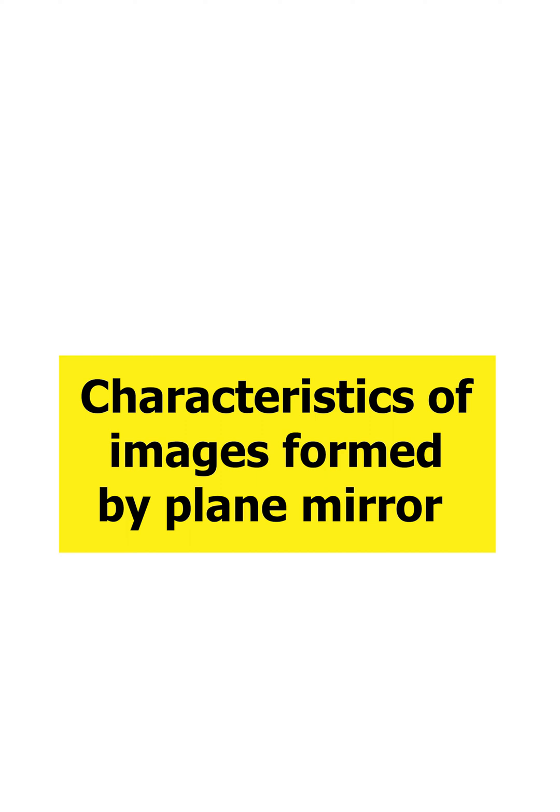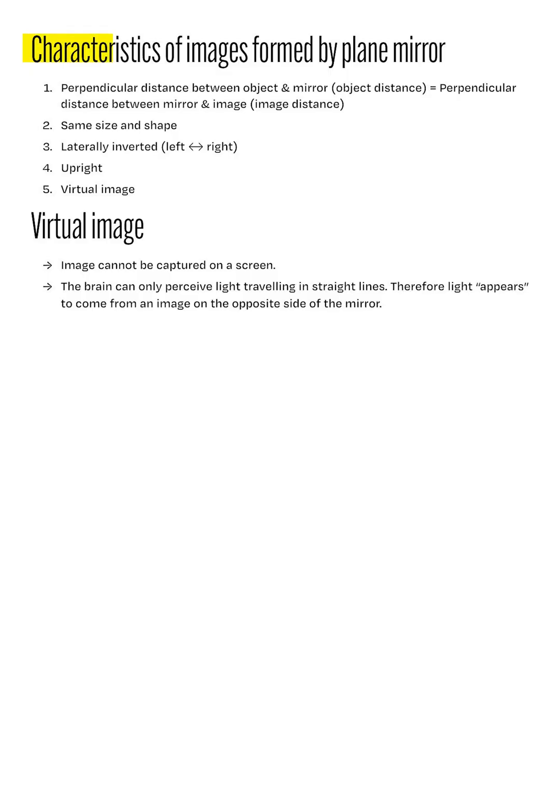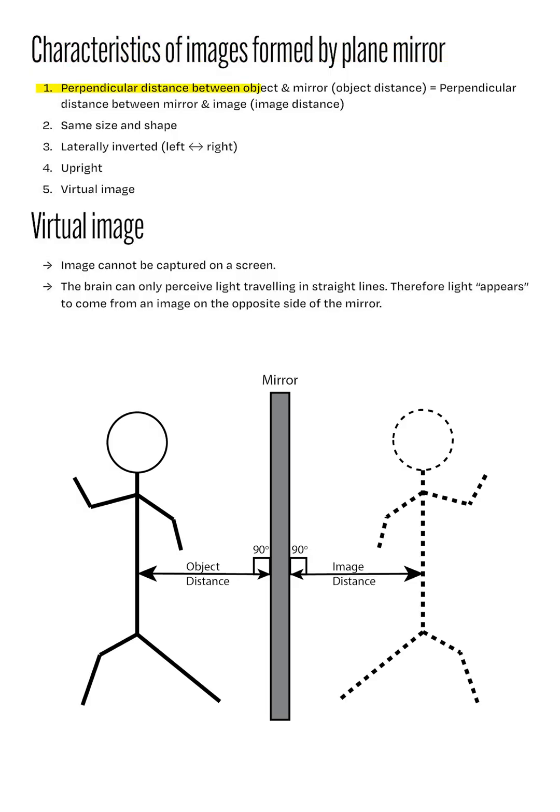In the next part of the chapter, we will discuss the characteristics of images formed by a plane mirror. There are a total of five characteristics. Number one, the perpendicular distance between the object and mirror must be equal to the perpendicular distance between the mirror and image. Number two, the images produced are of the same size and shape.